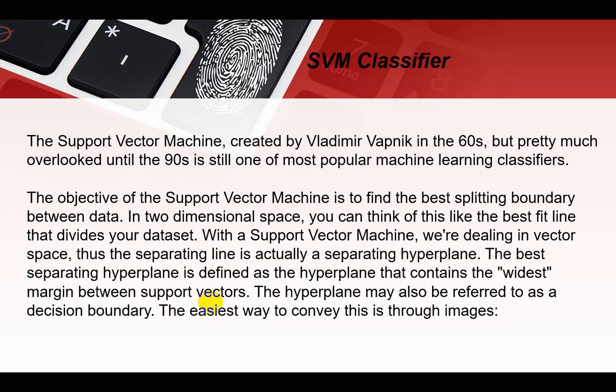The objective of the Support Vector Machine is to find the best splitting boundary between the data. The main objective is to create two separate classes divided by a boundary line. In two-dimensional space, you can think of this like the best fit line that divides your dataset. A best fitted line is made between the two separate datasets, which divides both datasets.